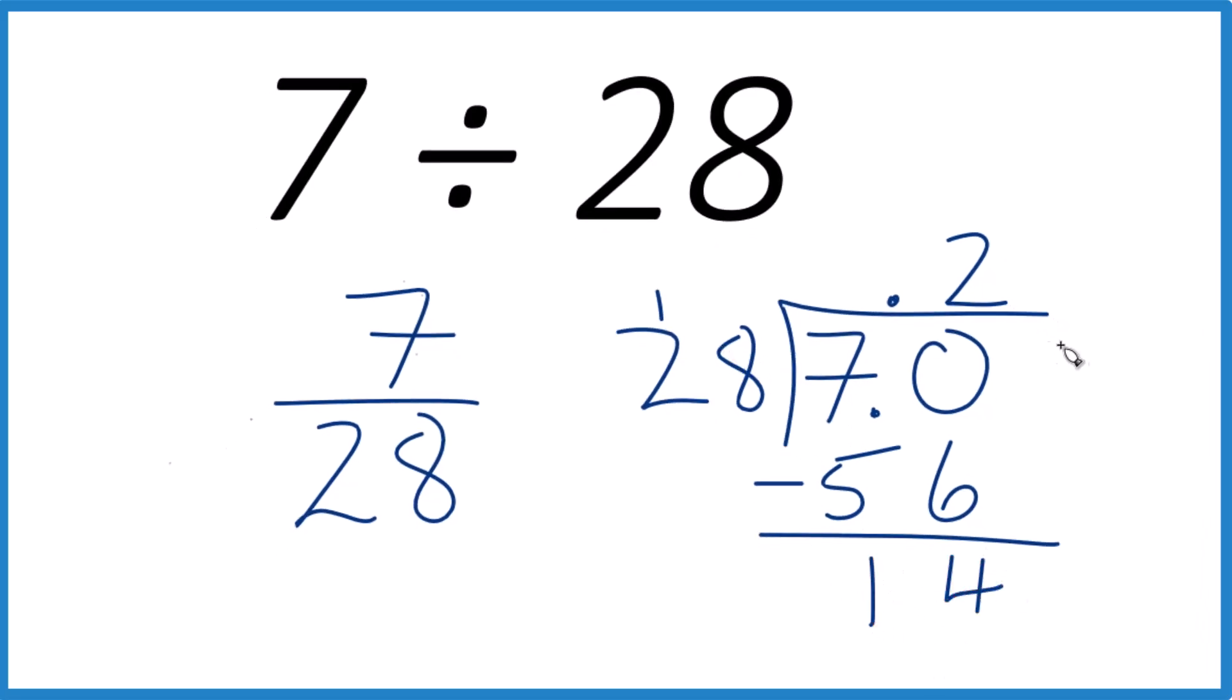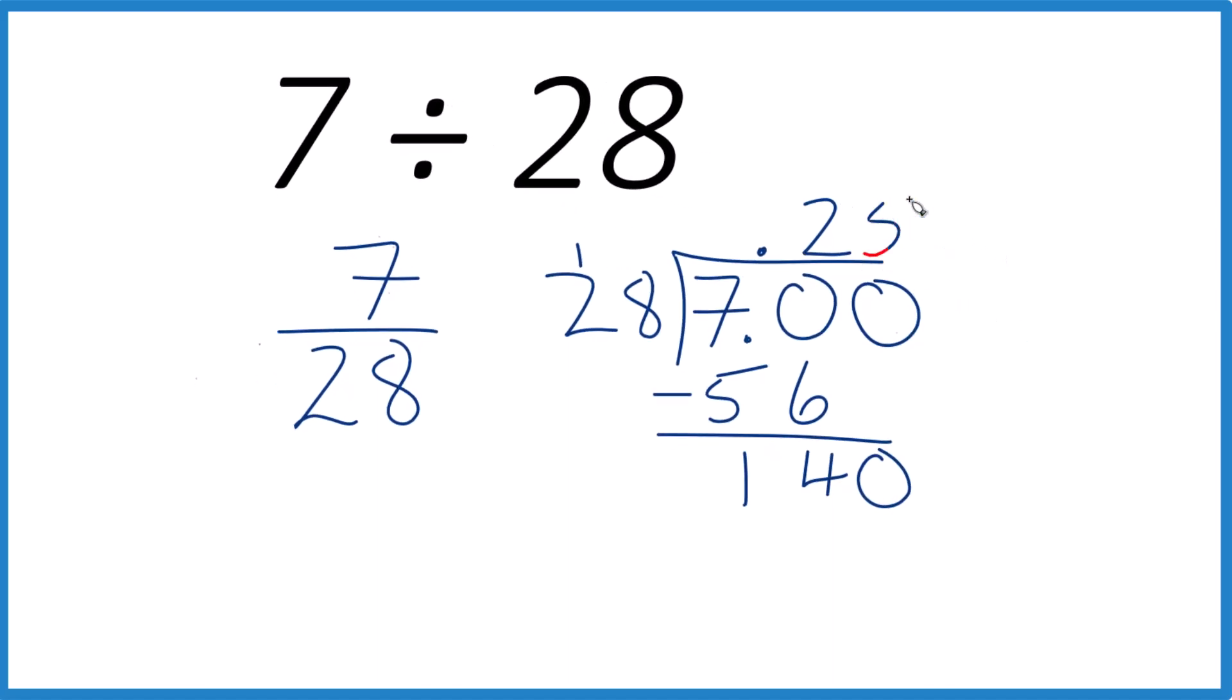So 28 doesn't go into 14, but we can consider this 7.00 as long as we move over a place and bring that 0 down. And now 5 times 8 is 40, 5 times 20 is 100. So I think that works. 5 times 28 is 140. Subtract, no remainder.